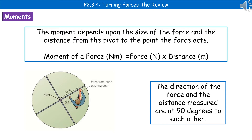This is an equation you are going to have to learn and recall in your exam. One thing to remember when looking at this: the direction of the force and the distance measured are at 90 degrees to each other. Looking at the diagram in the left-hand corner, the hand is pushing the door and it must be at 90 degrees to the distance. So it's not 0.8 meters — it's 0.7 meters, because that is at 90 degrees to the force.